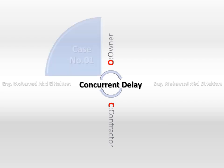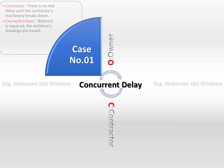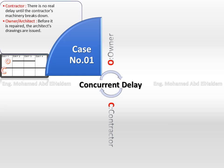There are four possible situations. Case number 1. Contractor situation: there is no real delay until the contractor's machinery breaks down. Owner situation: before it is repaired, the architect's drawings are issued.